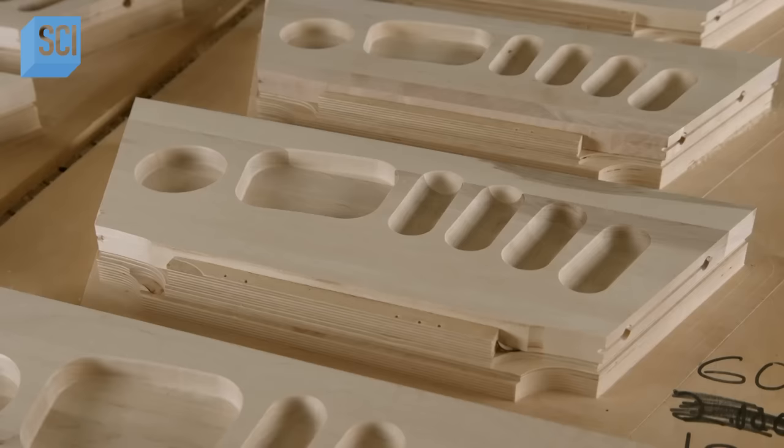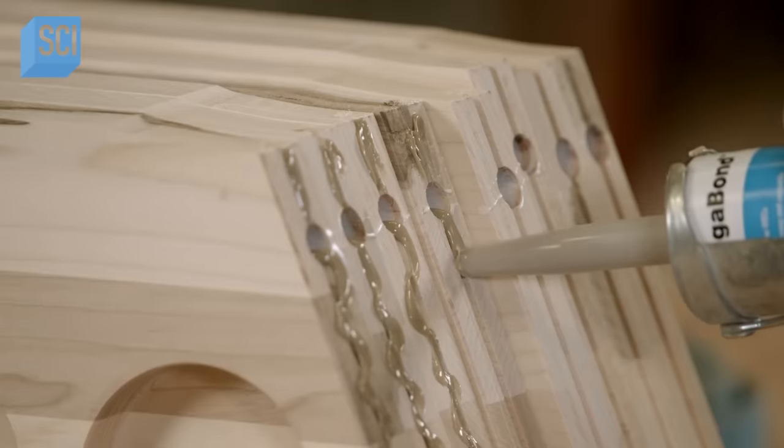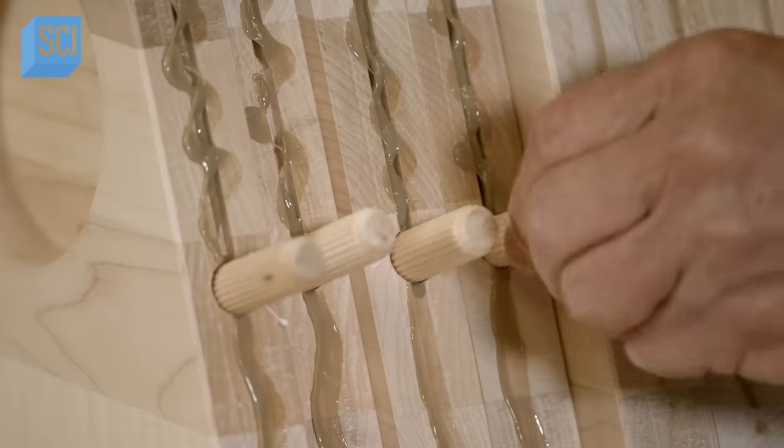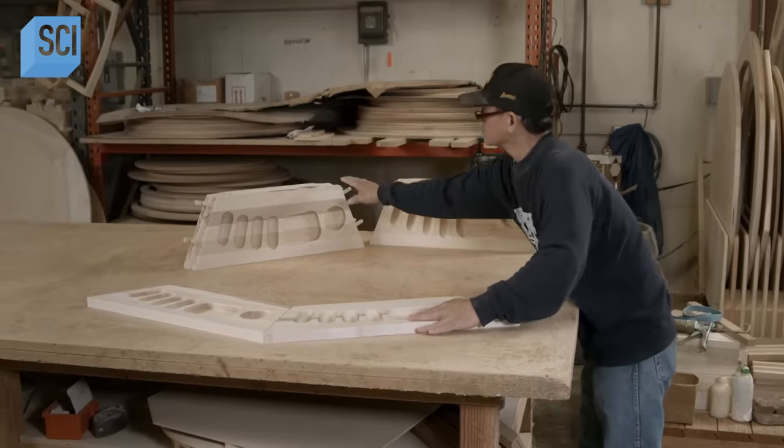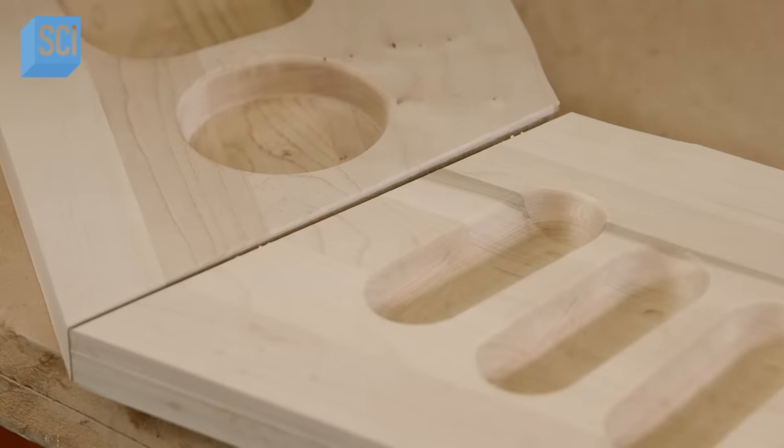The segments are now ready for assembly. A worker pipes high-strength adhesive and grooves along the edges and into the dowel holes. He inserts the dowels in the holes in one side of each segment. He arranges the segments in a circular pattern and inserts the dowels in the corresponding holes.